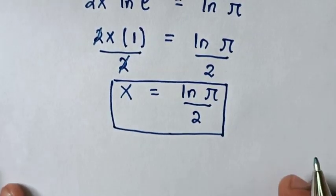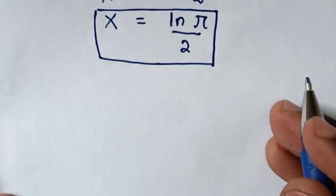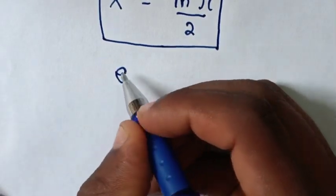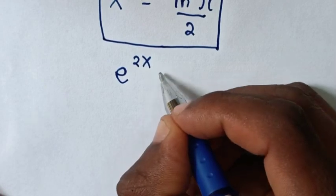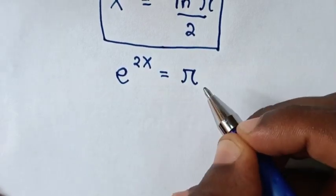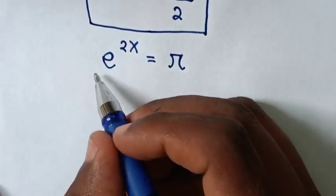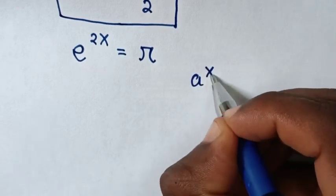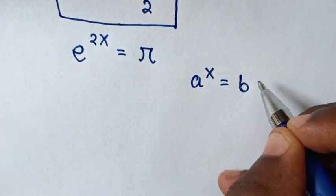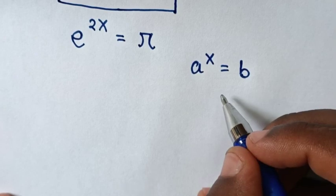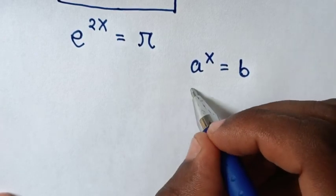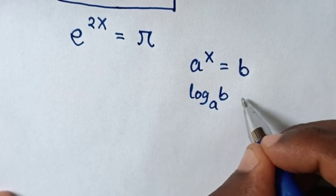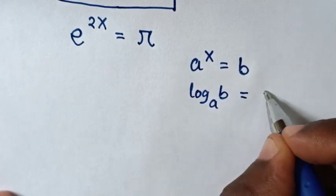Or, to solve using another method, from our problem which is e to the power of 2x is equal to pi. In this equation, it is in the form of a to the power of x is equal to b. So when you apply logarithm, this form will be log of b, base a, is equal to x.